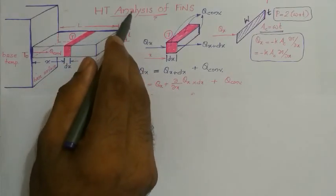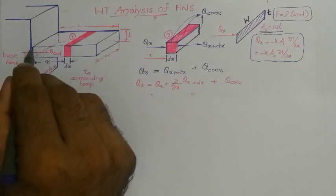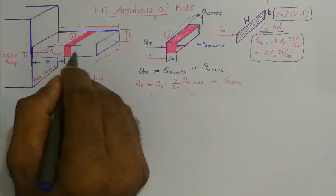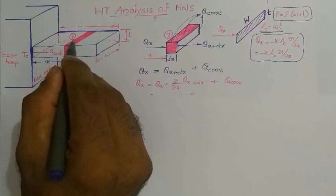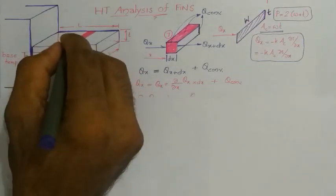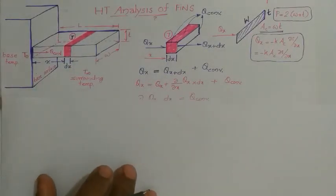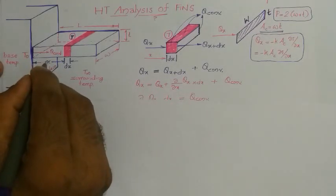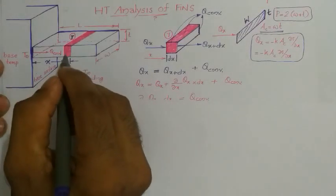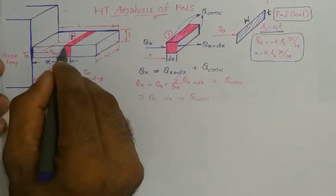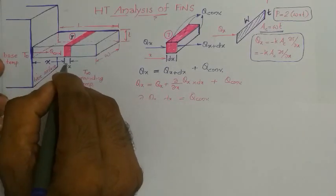By conducting the heat transfer analysis, we have to find the temperature variation along the fin. We need to find the distribution of temperature as a function of the variable x, which is measured from the base. For this analysis, we consider an element within the fin spaced at a distance x from the base and having a thickness of dx.